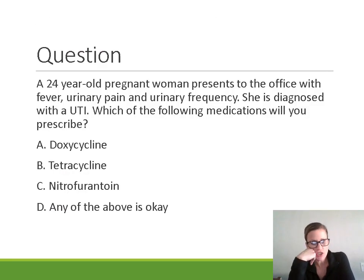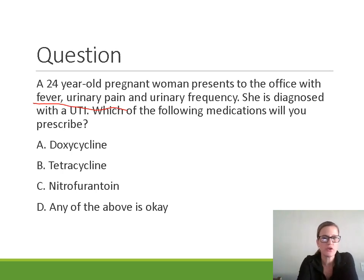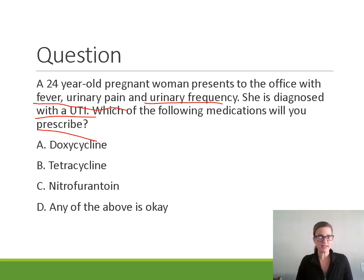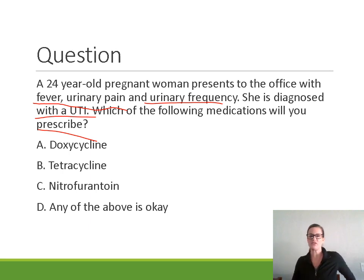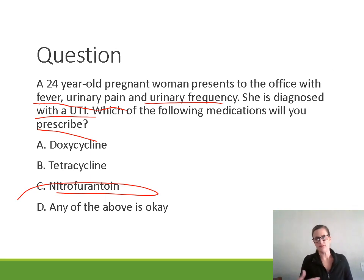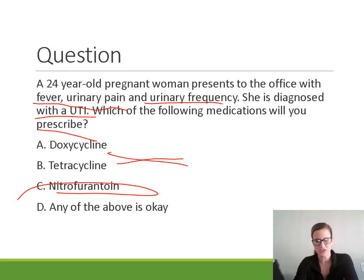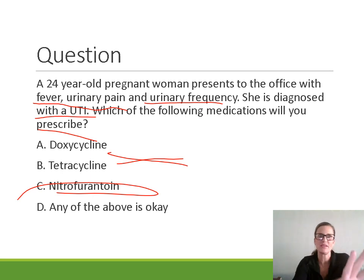A practice question: a 24-year-old pregnant woman presents with fever, urinary pain, and urinary frequency, and is diagnosed with a UTI. The correct medication would be nitrofurantoin. Tetracyclines — including doxycycline — cannot be used because they get deposited in bones and teeth, and this even applies to the fetus. The specific agents you can and cannot use in pregnancy will be covered in more detail when we get to the individual antibiotic classes.